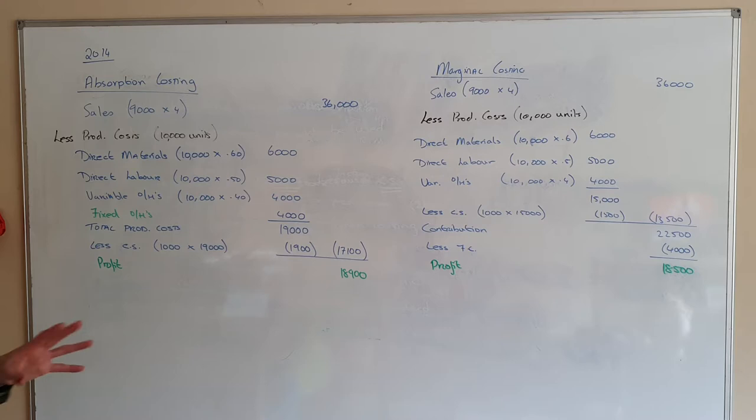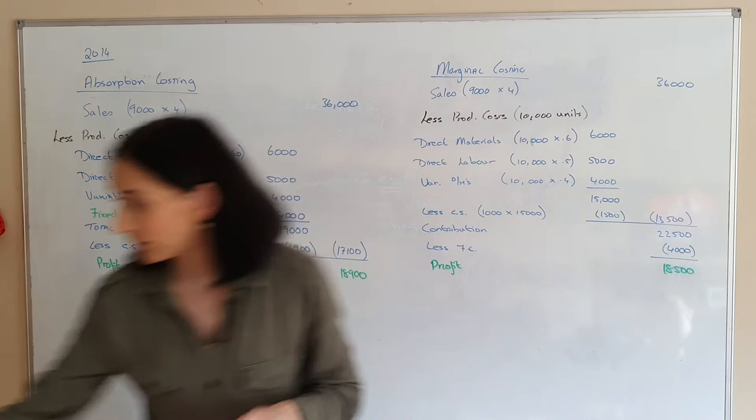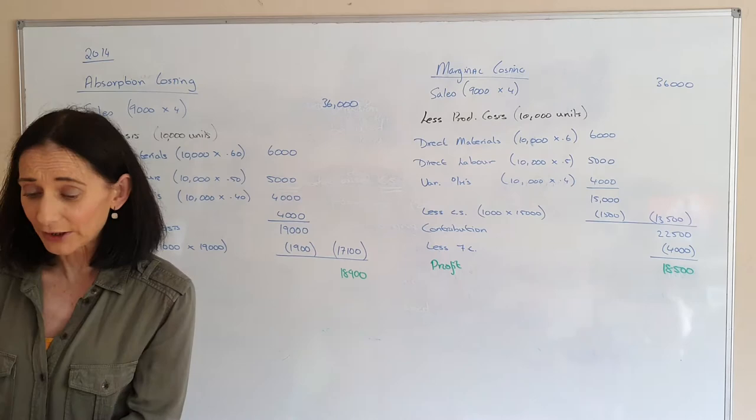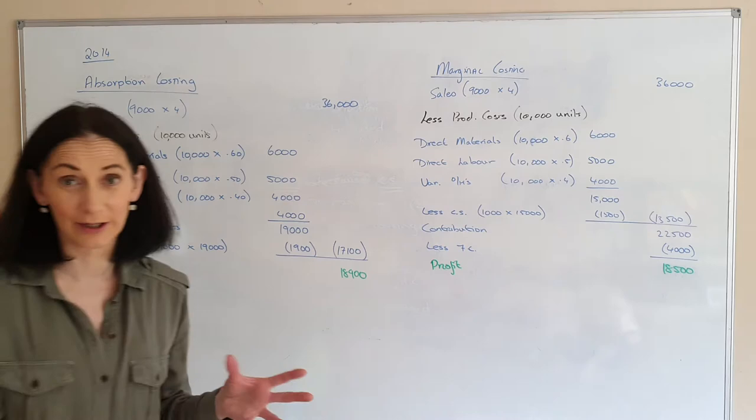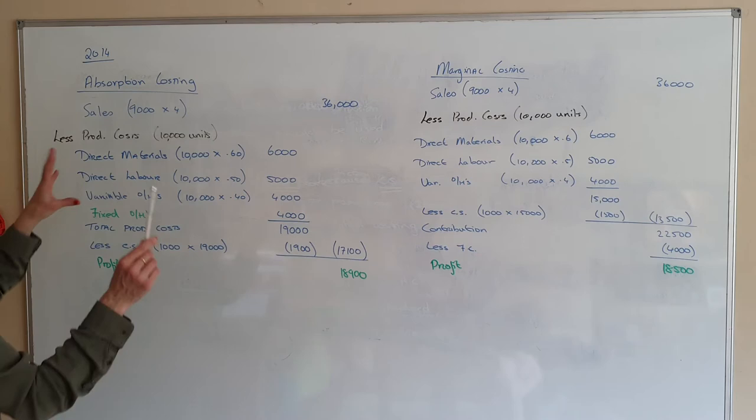Normally when we're doing marginal and absorption costing we say everything we make we sell, but in this question in part B they're saying you made 10,000 units and 9,000 of these are sold, which means 1,000 units are being left over. That leftover stock is called our closing stock.